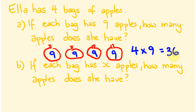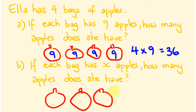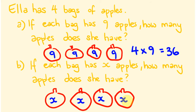Now let's do this algebraically. We have these four bags, but instead of knowing there are nine in each, we now have a variable amount. It might be one apple, five apples, nine apples, or 126 apples in each bag. We're looking for an expression that covers all cases. So instead of four times nine, we write four times x, which we write even more concisely as 4x. That's how we write an algebraic expression involving multiplication.